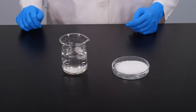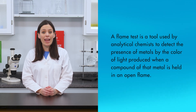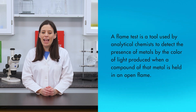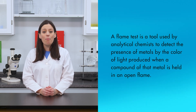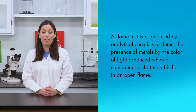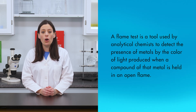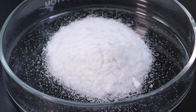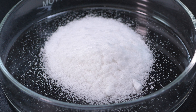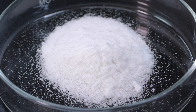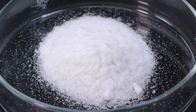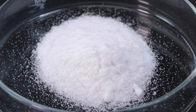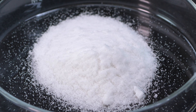Even though some metals and their compounds are not colorful, they produce colorful flame tests. A flame test is a tool used by analytical chemists to detect the presence of metals by the color of light produced when a compound of that metal is held in an open flame. Suppose you were given a sample of an unknown compound to identify — by conducting a flame test, you could determine if the compound contained a particular metal, helping you narrow down the possibilities for its identity.